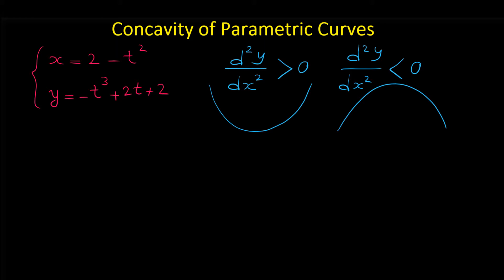For determining the values of t that this curve is concave up or concave down, we have to find d²y/dx², the second derivative of this parametric equation. First we have to start with dy/dx, the first derivative. For finding dy/dx in parametric curves we use the formula: dy/dx is dy/dt over dx/dt.